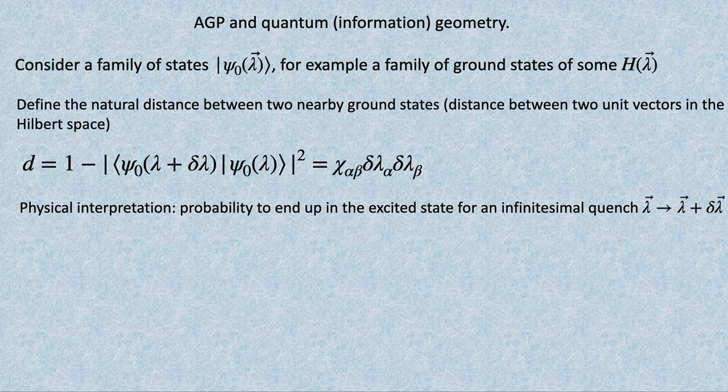You can see that this distance is strictly positive because the overlap of two functions is less than one. So if I do a Taylor expansion, I should get something quadratic, where chi should be a positive or at least semi-positive tensor.